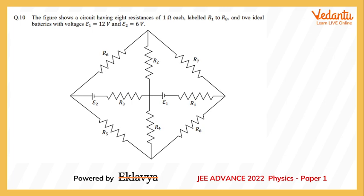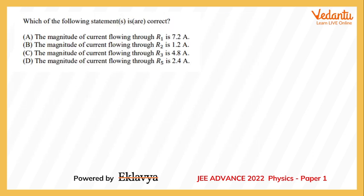We are discussing Question 10 of Paper 1 of Physics of JEE Advanced 2022. A circuit is given where all resistances are 1 ohm, labeled from 1 to 8. There are two ideal batteries: one with an EMF of 6 volts and one with 12 volts. The options ask about current through four different resistances.